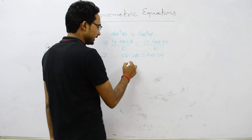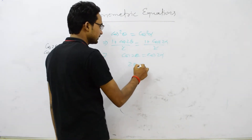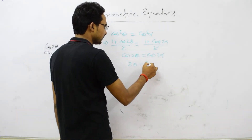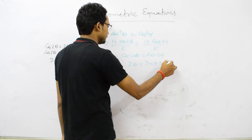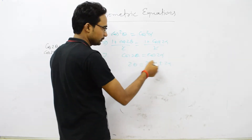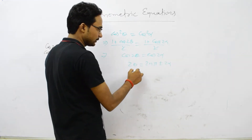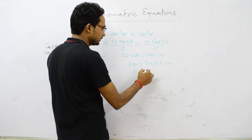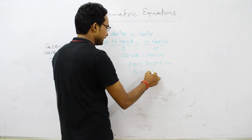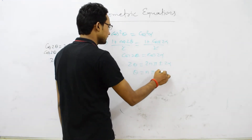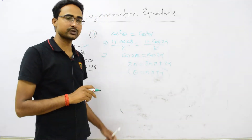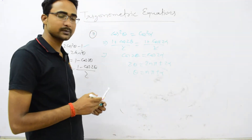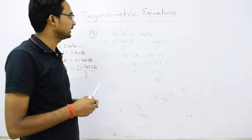So we write 2θ = 2nπ ± 2α, and dividing by 2, θ = nπ ± α. In this case also we get the general solution θ = nπ ± α.